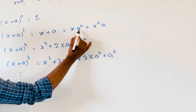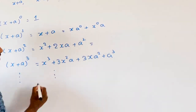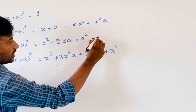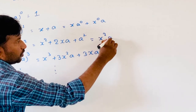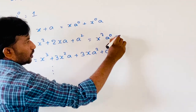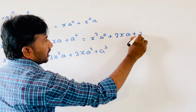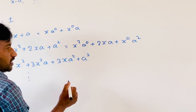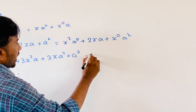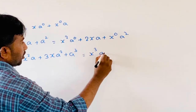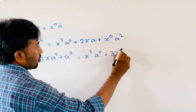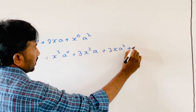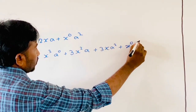Here, any power 0 is equal to 1. The expression of (x+a) whole square — I will rewrite that one: x square into a power 0 plus 2xa plus x power 0 into a square. And also, if I write (x+a) whole cube: x cube into a power 0 plus 3x square into a plus 3x into a square plus x power 0 into a cube.